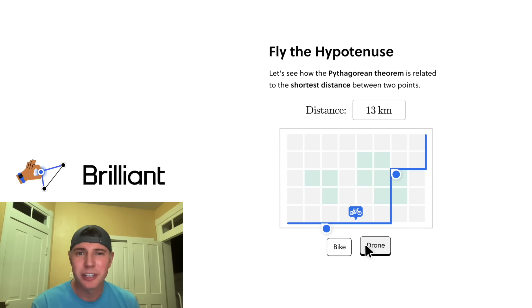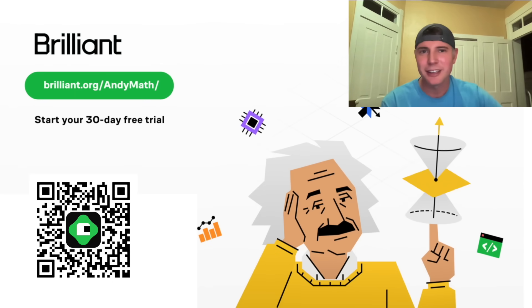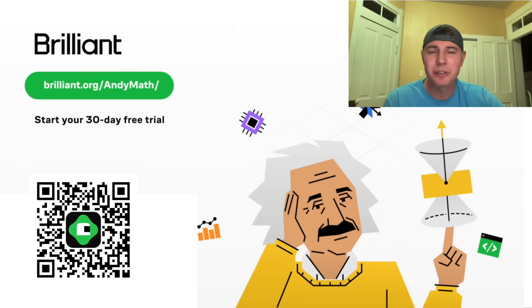If you want to try out Brilliant.org, they have a free 30-day trial. You can visit Brilliant.org slash Animath or click on the link in the description. You can also get 20% off an annual premium subscription. How exciting.